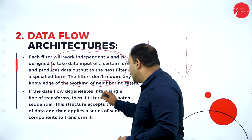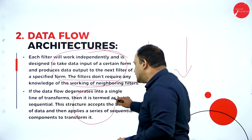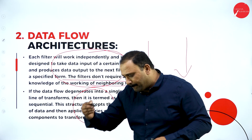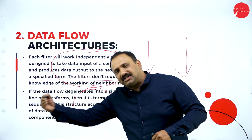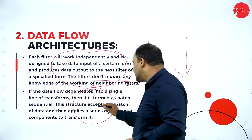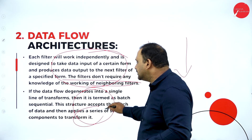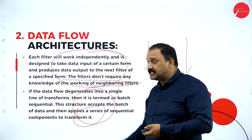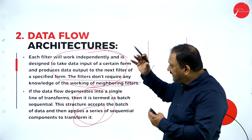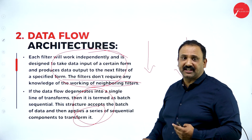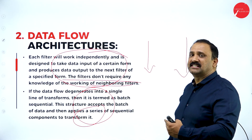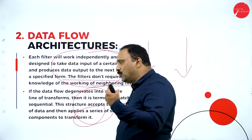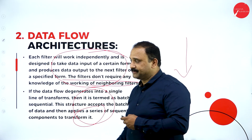When the data flow degenerates into a single line of transform, it is termed as batch sequential — you go batch by batch in terms of processing. This applies to a series of sequential components that are applied to transform it. In a data flow architecture, you are going step by step, integrating the patterns and the system, moving from one end to the other.